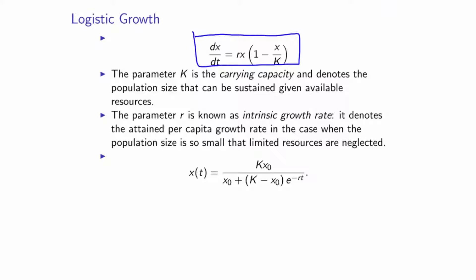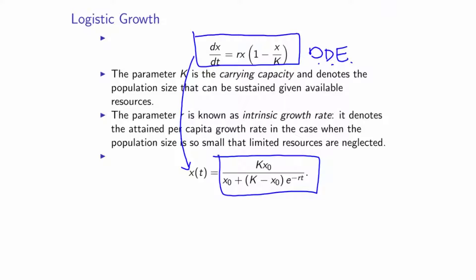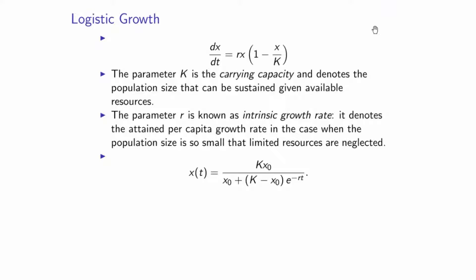This is the ordinary differential equation. There are methods for computing an explicit solution — this is one of those ODEs for which you can find an explicit solution using something called separation of variables. This expression here is the solution: a function of time that has parameters K and r, and it satisfies that ordinary differential equation. That's what it means for this to be a solution.